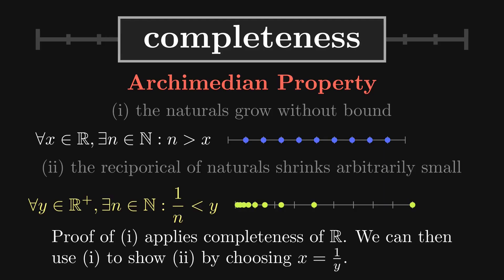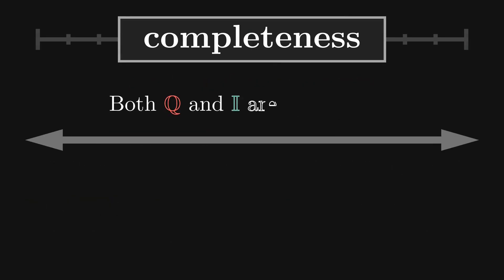While this result may seem trivial, it's actually quite crucial. It ensures that there are no infinitesimally small or infinitely large real numbers relative to the naturals. This property underpins the dual density of R.